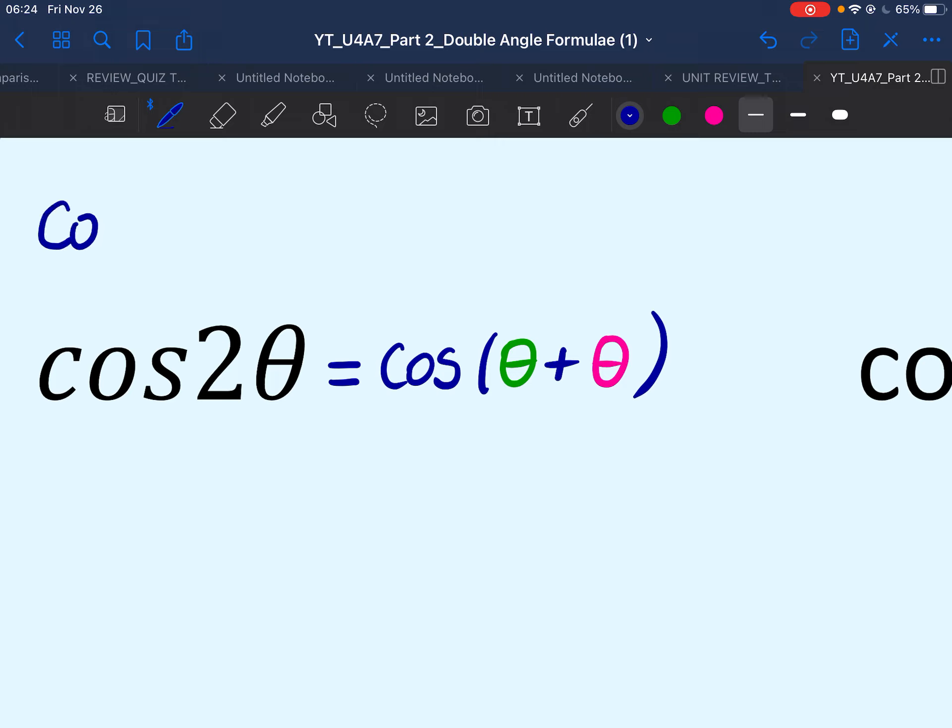Recall again that the formula for compound angles cosine is cos A plus B equals cos A cos B minus sin A sin B.